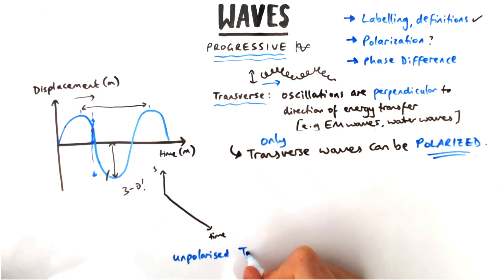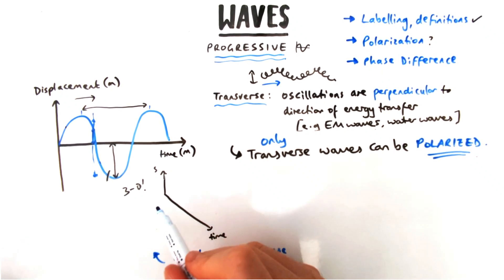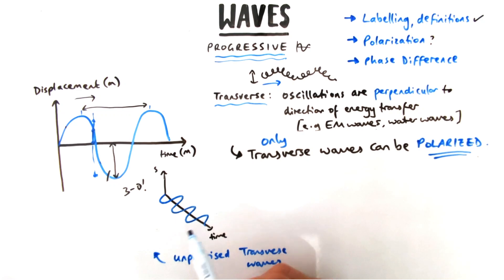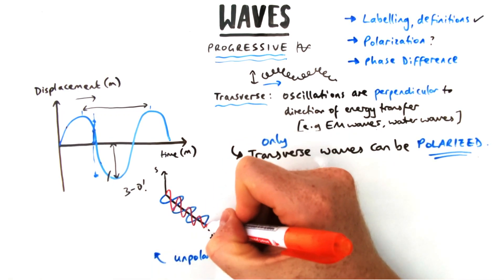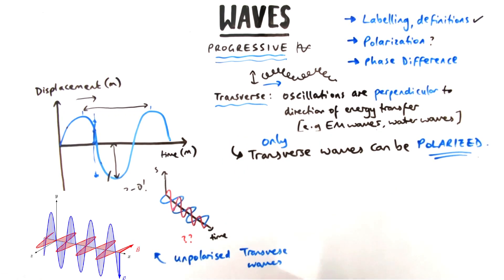I've got a slightly tricky task to draw a diagram of this. I'm going to draw some unpolarized waves. This is deliberately not going to be great. You can find a better image I'm going to put on the screen as well, but the idea is they're oscillating in all directions: up, down, left, right, diagonally, etc.